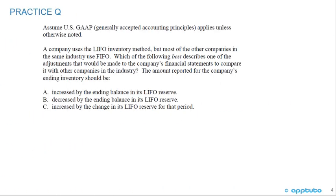Let's do a practice question to check our understanding. Assume US GAAP applies unless otherwise noted. A company uses the LIFO inventory method, but most other companies in the same industry use FIFO. Which of the following best describes one adjustment to make the company's financial statements comparable? The ending inventory should be: A) increased by the ending balance in its LIFO reserve, B) decreased by the ending balance in its LIFO reserve, or C) increased by the change in its LIFO reserve for that period.